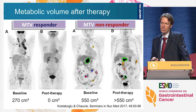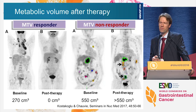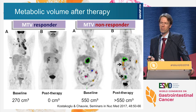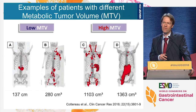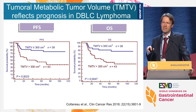MTV can be used to look at response: a responding patient can go from MTV of 270 to 0, while a non-responder goes from 550 cm³ with new lesions appearing. MTV has prognostic significance — one of the first fields to recognize this was lymphoma, where patients with low MTV have much better prognosis for both PFS and OS compared to patients with high MTV.